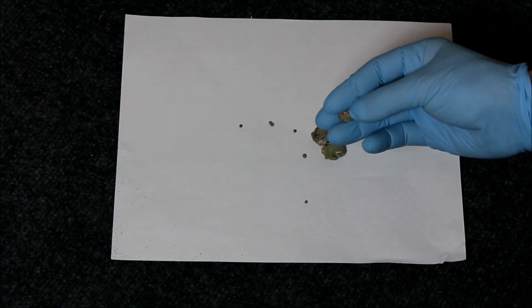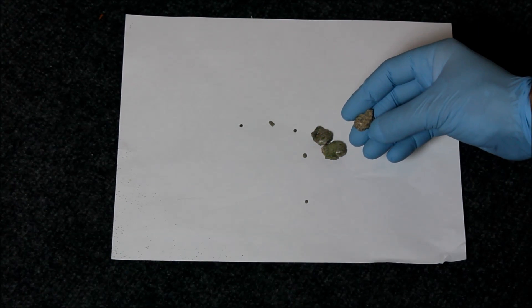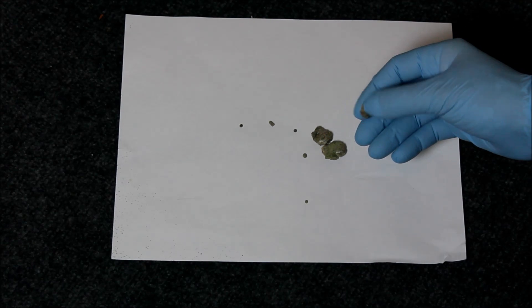What is trinitite? Well, it's glass melted in the fires of the very first nuclear explosion ever, well, man-made on Earth.